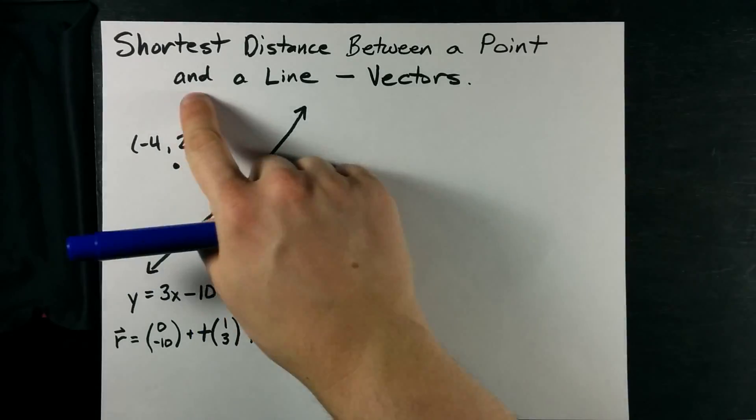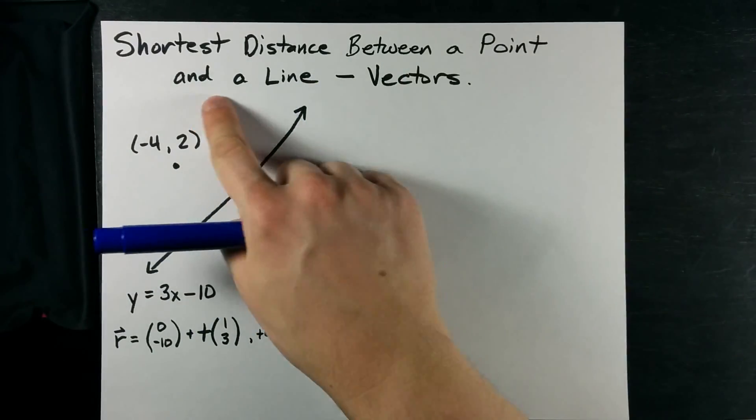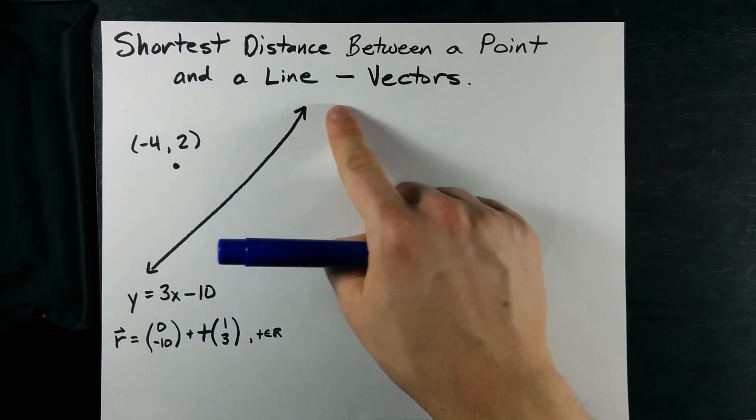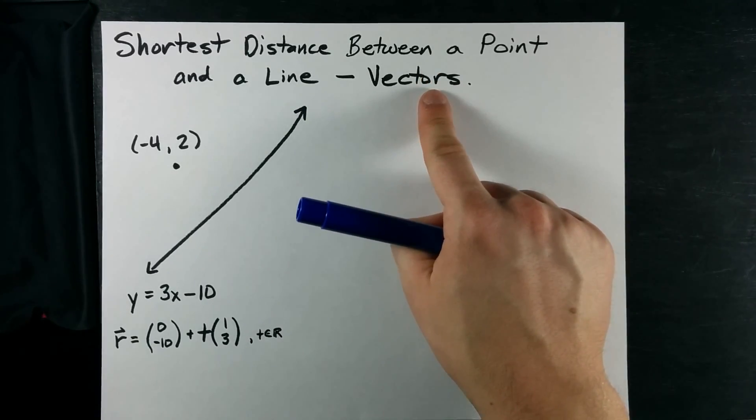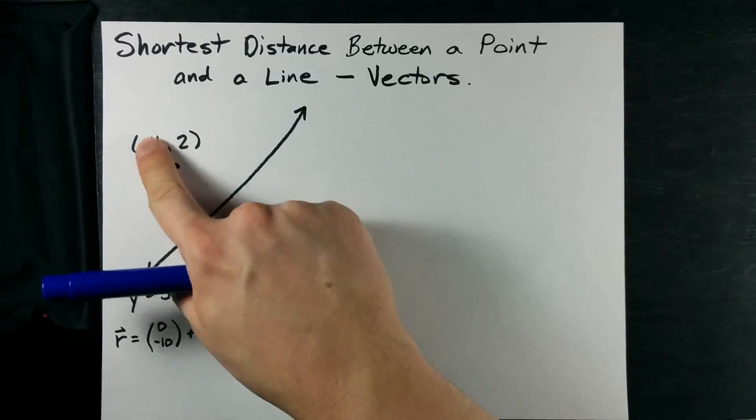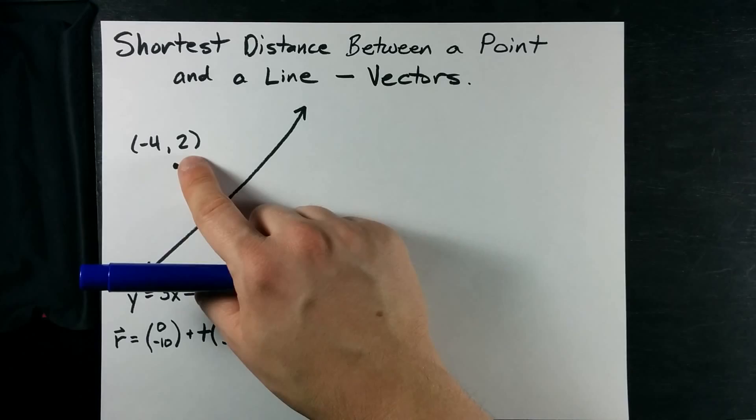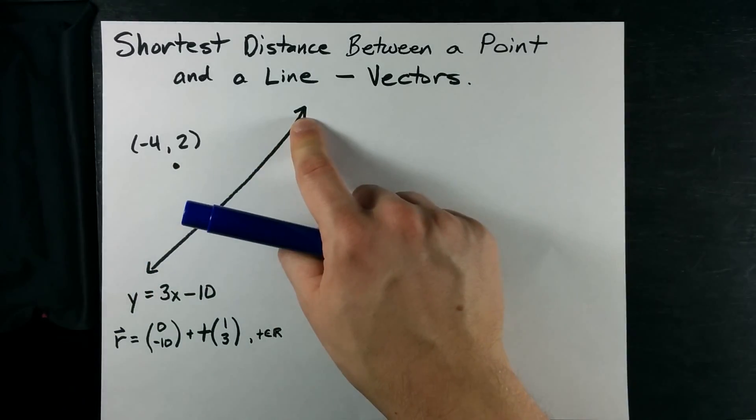Another way to find the shortest distance between a point and a straight line. This one uses vectors. Here I have a point that I just picked out of nowhere and the equation of a line that I picked out of nowhere.